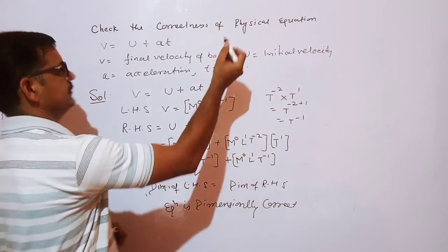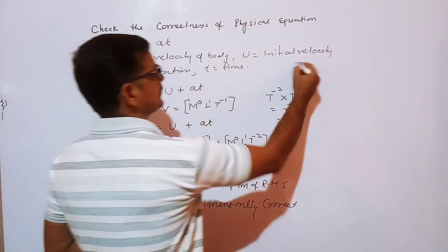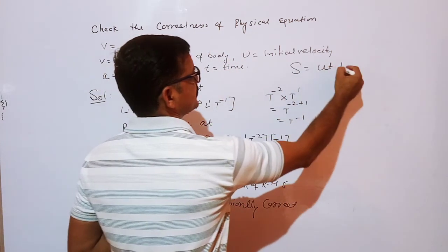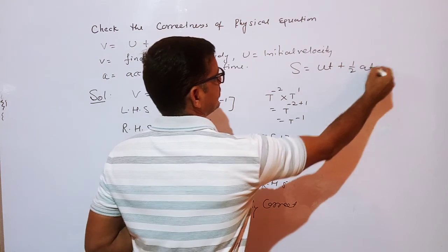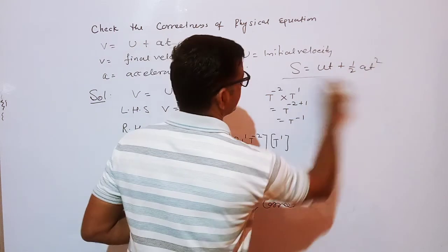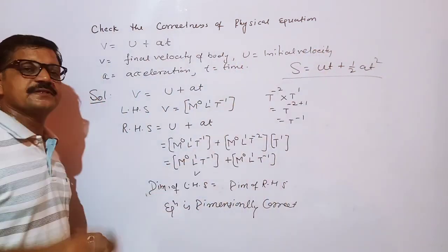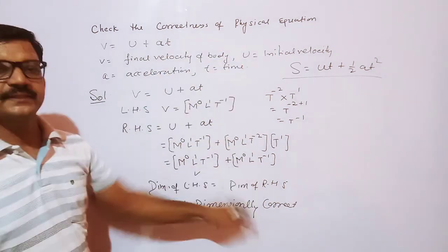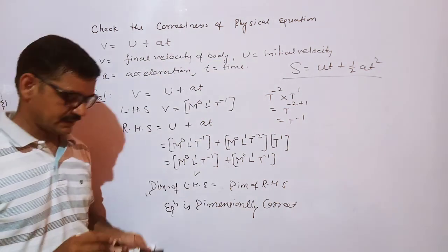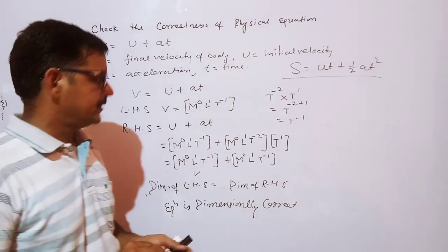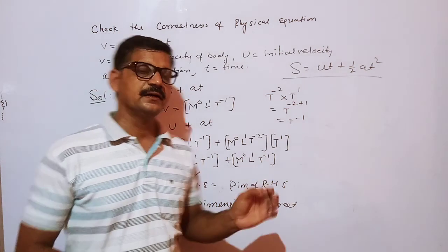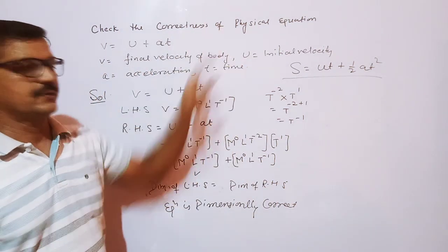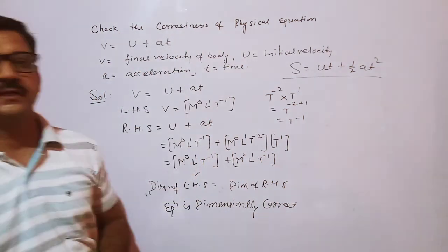We have another equation: s equal to ut plus half at², and you can check whether this equation is dimensionally correct or not by proceeding in the same way. In the next video, we will discuss the second use of dimensional equations. Thank you.